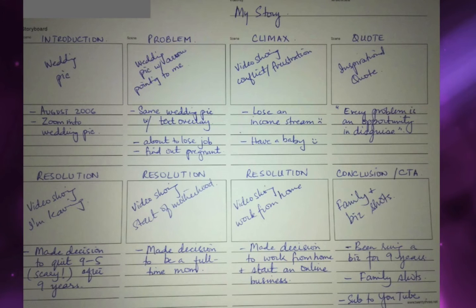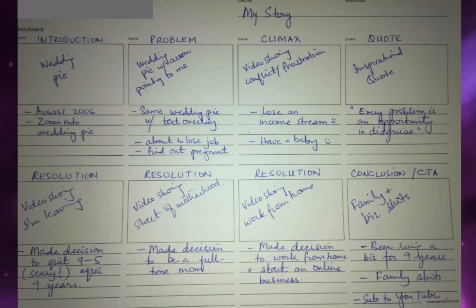For the introduction, I want to put a wedding pic. For the problem, I want to put the wedding pic with some text overlay that talks about the problem. For the climax, I want to show a stock video from Wave Video's library showing conflict and mixed emotions. For the quote, I want to show something inspirational. For the three resolutions: a decision to quit nine to five, a video showing the start of motherhood, and a video showing somebody working from home. And for the conclusion and CTA, I want to use family pictures and business screenshots and add in a CTA, which is really easy to do in Wave Video.